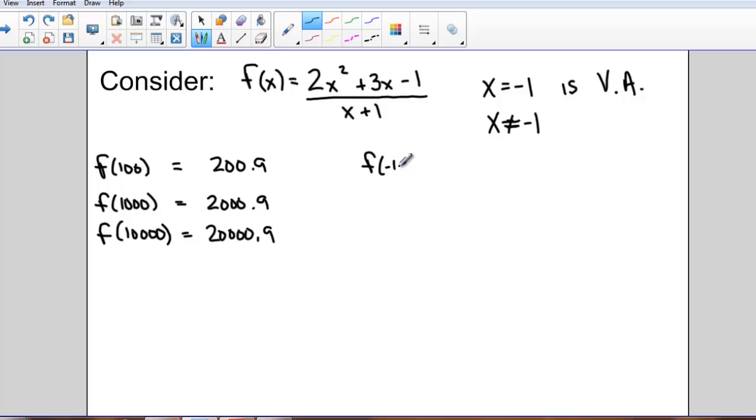Well, what about negative numbers? What if I did f evaluated at negative 100, f evaluated at negative 1,000, f evaluated at negative 10,000? What do I get? Well, you can check, but I get about negative 1,900, negative 19,989, or negative 199,989.